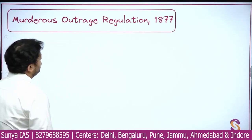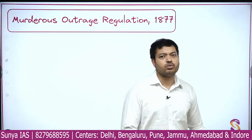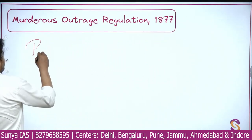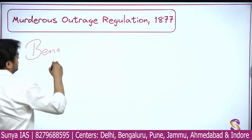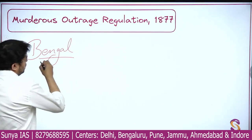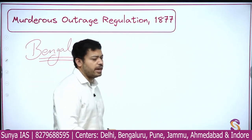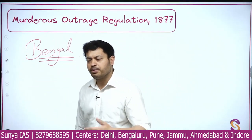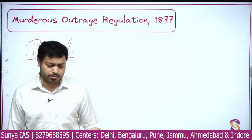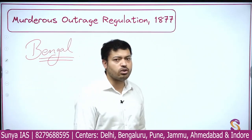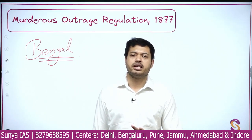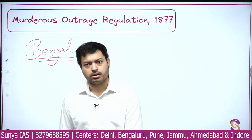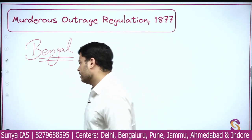The Murderous Outrage Regulation 1877 was again introduced in Bengal by Lord Lytton. It was done with the intention of clearing out any sense of militancy on the ground — any group of people whom the government thought could be involved in a murderous activity would face action. That's it.